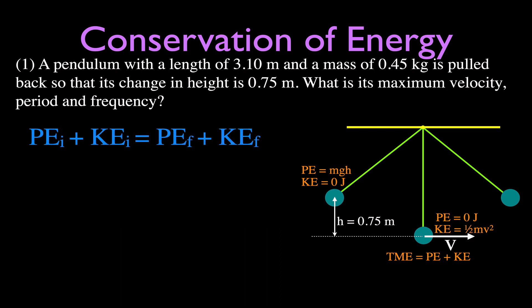Through conservation of energy, the sum of the kinetic and potential energy at the initial position equals the kinetic and potential energy at the final position. We're comparing the pulled-back position to the equilibrium position where maximum velocity occurs. The kinetic energy is zero at greatest displacement and the potential energy is zero at greatest velocity, so potential energy initial equals kinetic energy final.